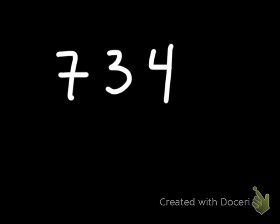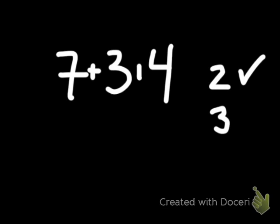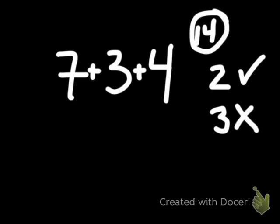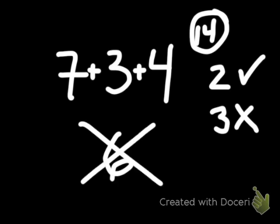Look at this number: 734. We want to know if 6 can divide evenly into this. Is it divisible by 2? It's an even number, so yes. Is it divisible by 3? If we add up our digits, 7 plus 3 is 10, plus 4 is 14. No, 3 does not go into 14, so 3 does not go into 734. Therefore it is not divisible by 6 — because it is only divisible by 2 and not by 3.